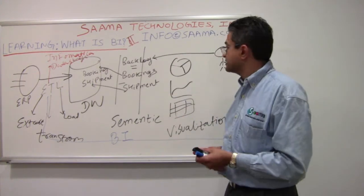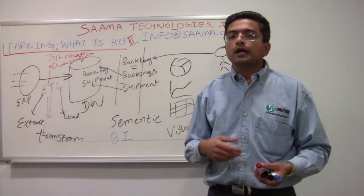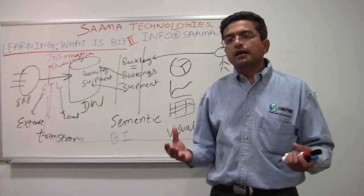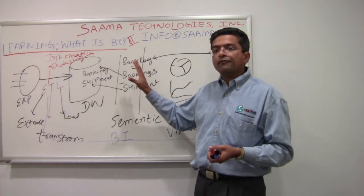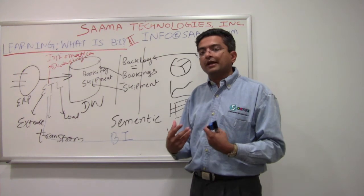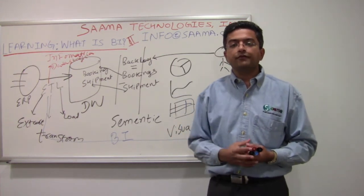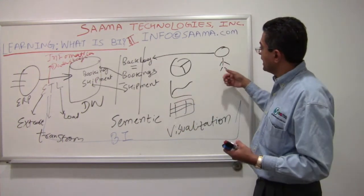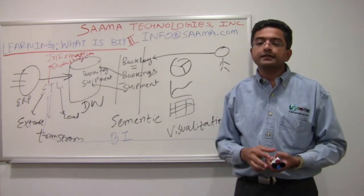Similarly, there are reporting softwares like BusinessObjects, Cognos, MicroStrategy, or OBIEE from Oracle. These are examples of reporting systems capable of providing a business interface to the underlying data. That layer is important for a business to interface with data without understanding the technical details behind it, and then being able to report off of it, visualize it.